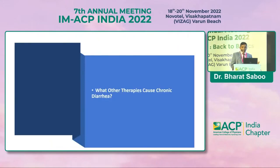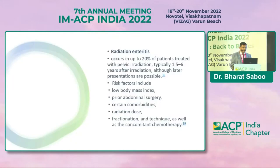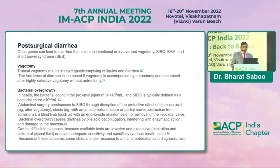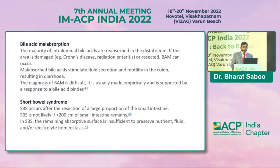Radiation enteritis affects up to 20 percent of patients treated with pelvic irradiation. Risk factors include low BMI, prior abdominal surgery, comorbidities, high radiation dose, fractionation technique, and concomitant chemotherapy. Post-surgical diarrhea is also common after vagotomy, and is associated with bacterial overgrowth, bile acid malabsorption, and short bowel syndrome.